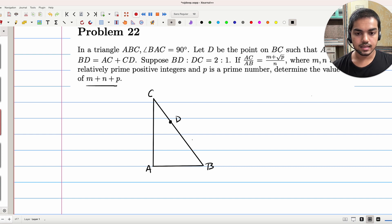So let's say that CD is T. Right, we denote it by T. Then because of this proportion, BD has to be 2T.